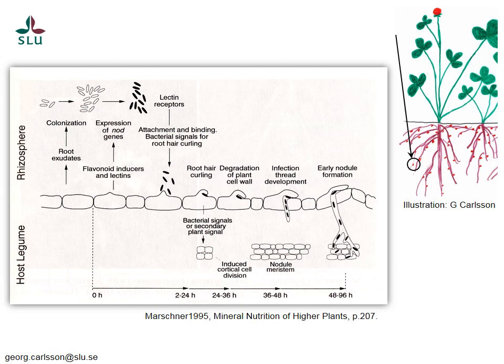The nitrogen fixing root nodule is the result of a very complex and complicated process with many interactions between the plant and the bacteria. This figure is a schematic drawing of the process when root nodules are formed. This line here shows the outer cell layer of a plant root, with the inside of the root downwards and the soil environment or rhizosphere up here outside of the root.